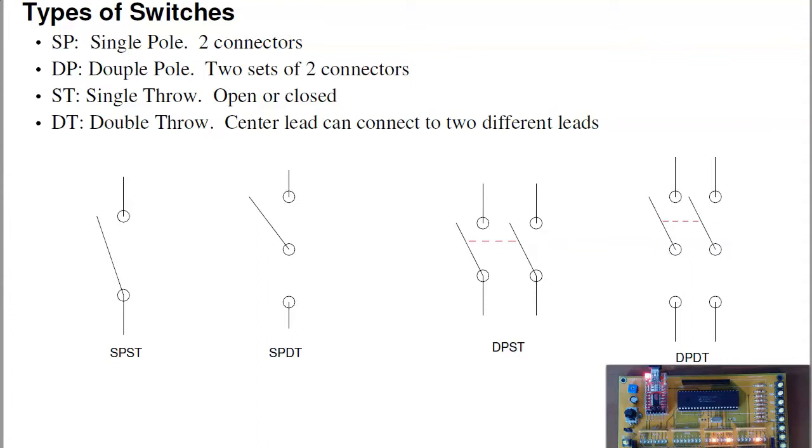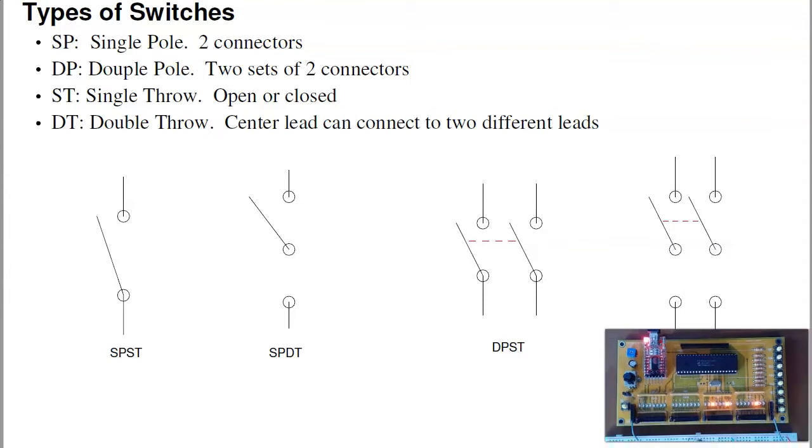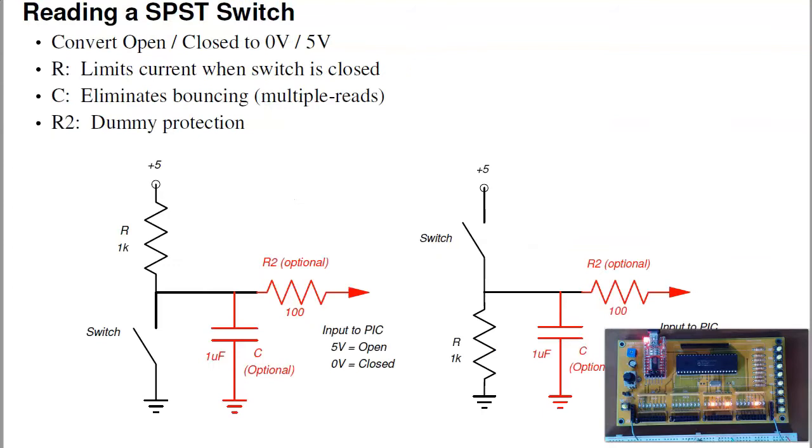That's what double-pole, double-throw switches are for, having two options, forward and reverse. Again, the pickboard that we're using has a single-pole, single-throw switch.